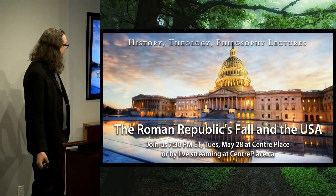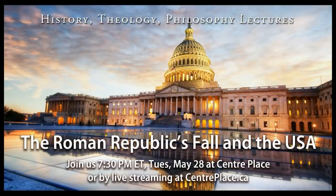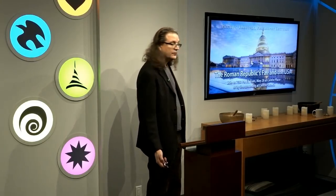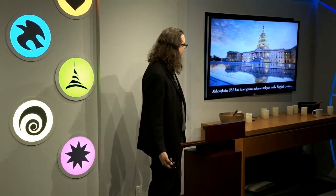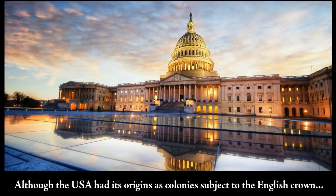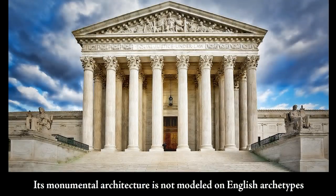Tonight we're talking about the Roman Republic's fall, and also we'll mention echoes of that for 21st century perspectives. Specifically, we want to look at how the Constitution of the Roman Republic worked, because that Republic has been the model for so many other traditions subsequently. For example, the US Capitol building — although the United States had its origins as colonies subject to the English crown, with an elite class primarily descended from the English.